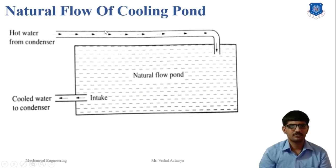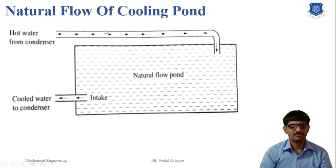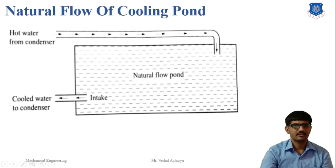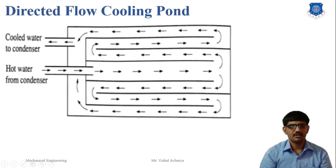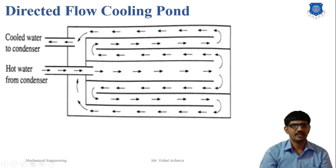In a natural flow cooling pond, hot water coming from the condenser is allowed to flow in an open area or heat transfer pond. The heat transfer action occurs with the help of convection. This is a simple method of cooling, but nowadays this type of cooling pond is not used. In the directed flow cooling pond, hot water comes from the condenser into the center line of the pond, and baffles called two-pass current are used. The convection effect is more than in the natural flow cooling pond, so the efficiency is higher.